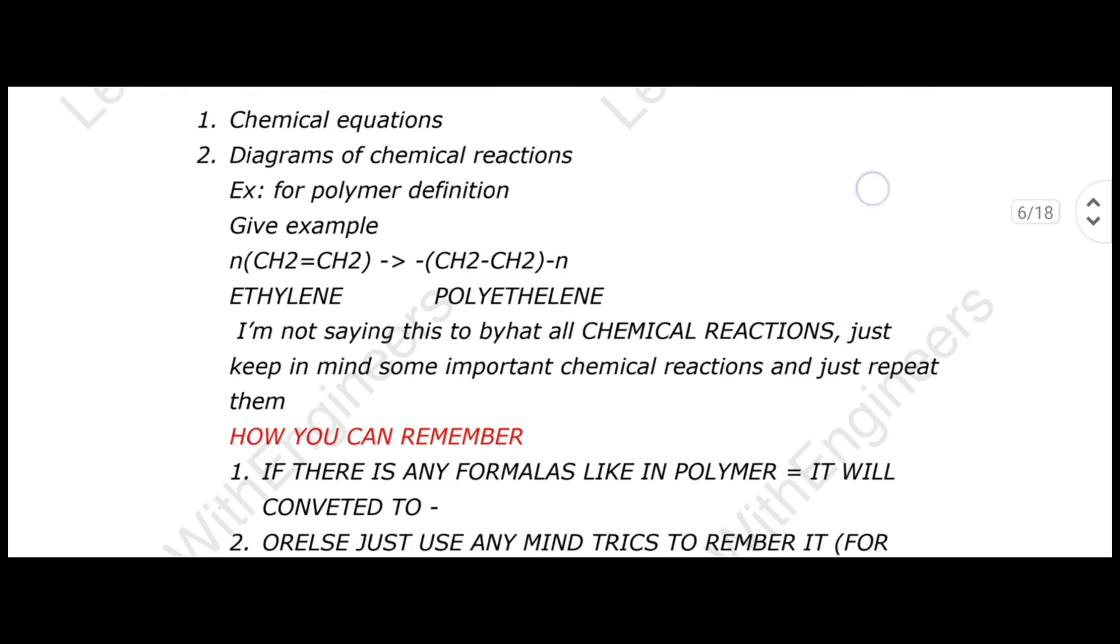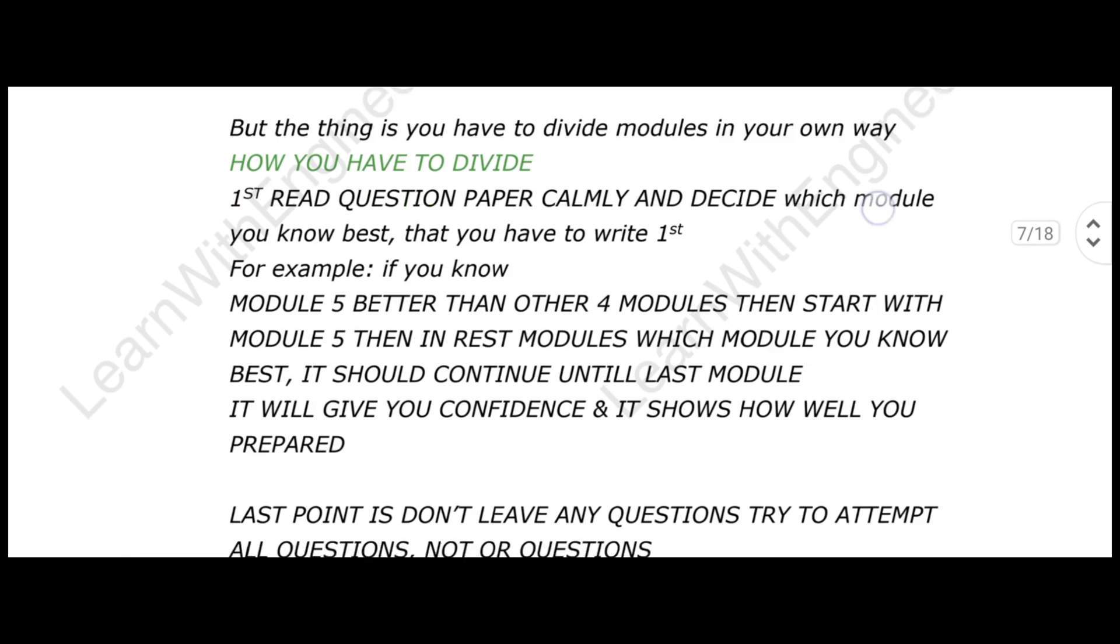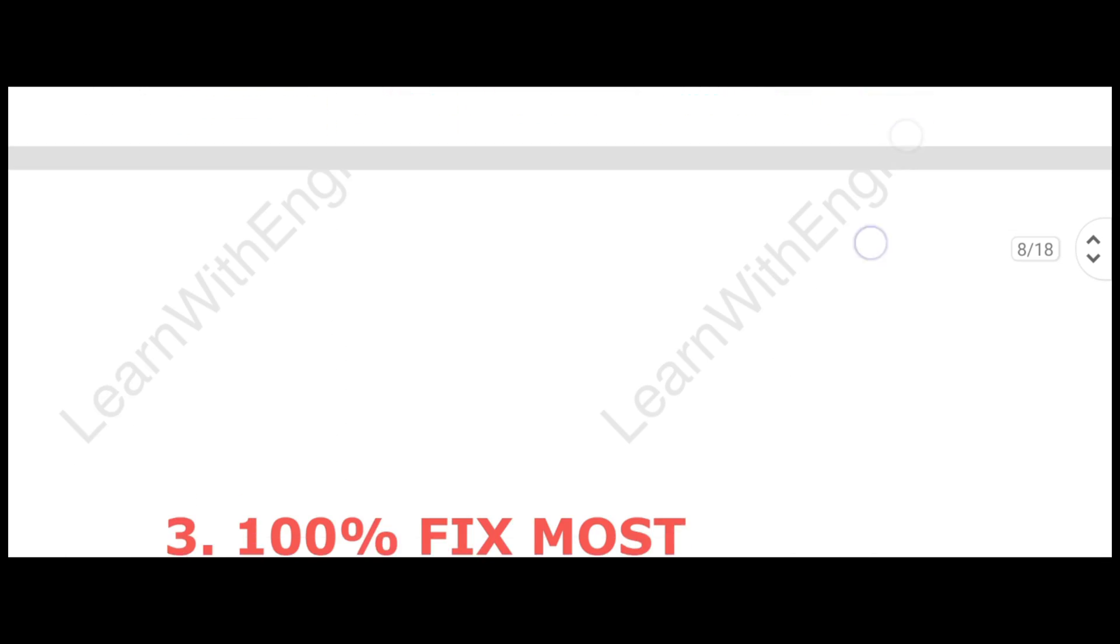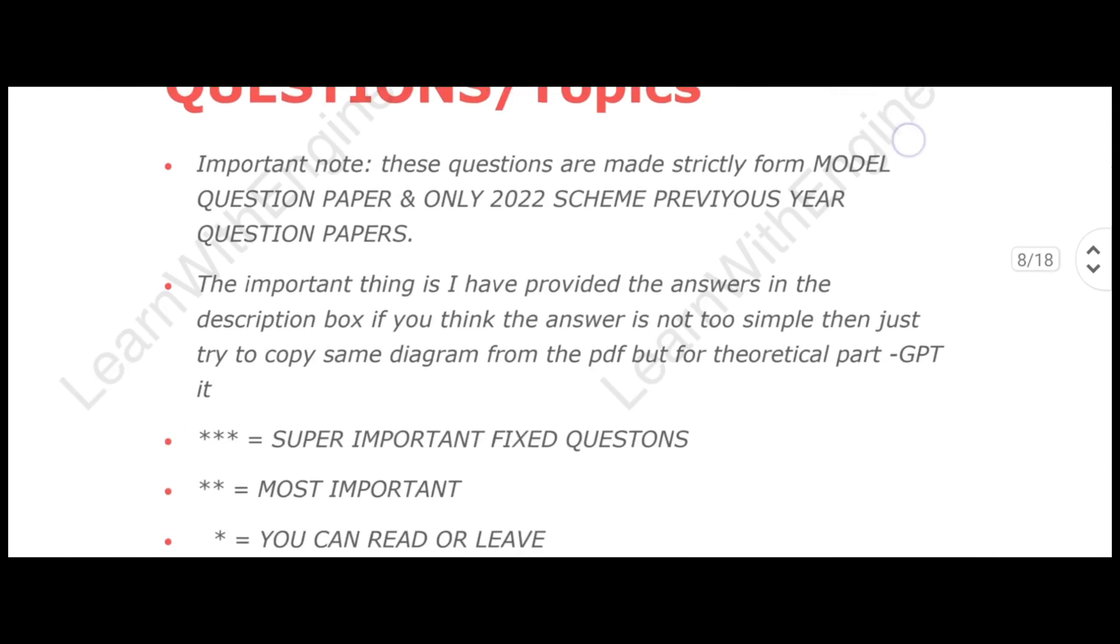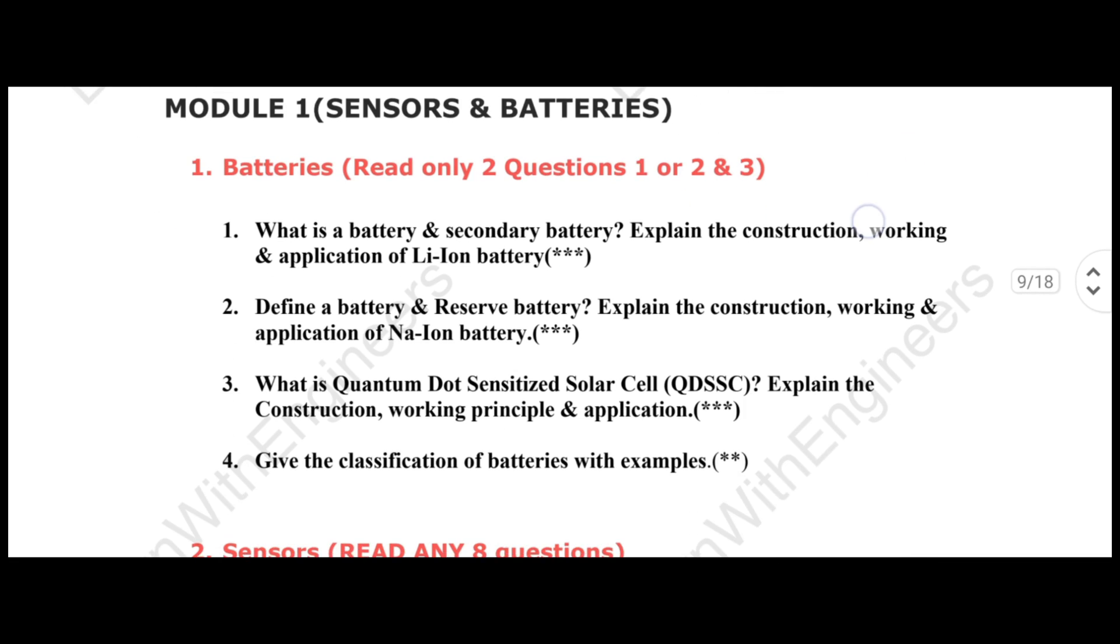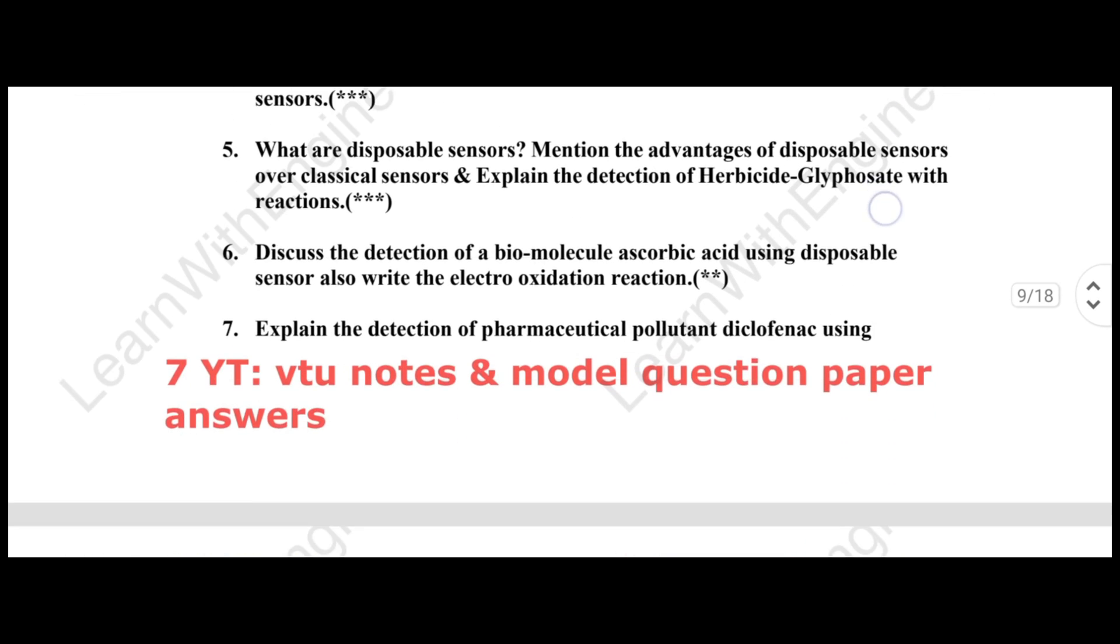First, complete Module 1 and 2, then 5, 4, 3 in this order. Read it, but read all modules. Don't just read—understand the method to solve problems and understand the concept. In this way, by just solving these questions, you can easily score well. Don't try to read whole notes. Solve these questions first, then anything else.